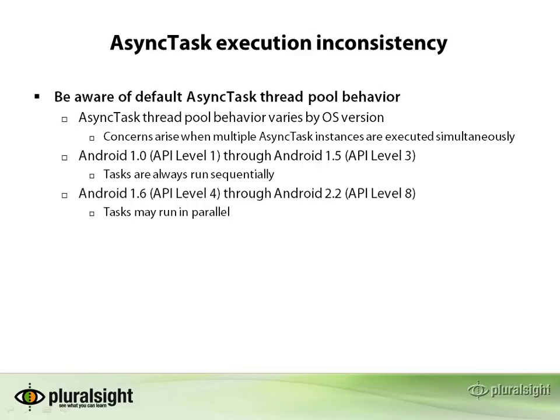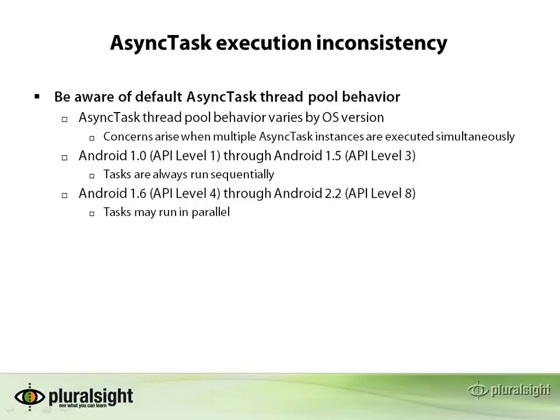Starting with Android 1.6 up until Android 2.2, they started using a different thread pool that, if you started queuing a bunch of tasks, may run some of them in parallel — which in some ways would make sense, particularly if something is being bound by the network or so forth. But if you tested your code against the APIs before that, things that used to work may suddenly not work well anymore.